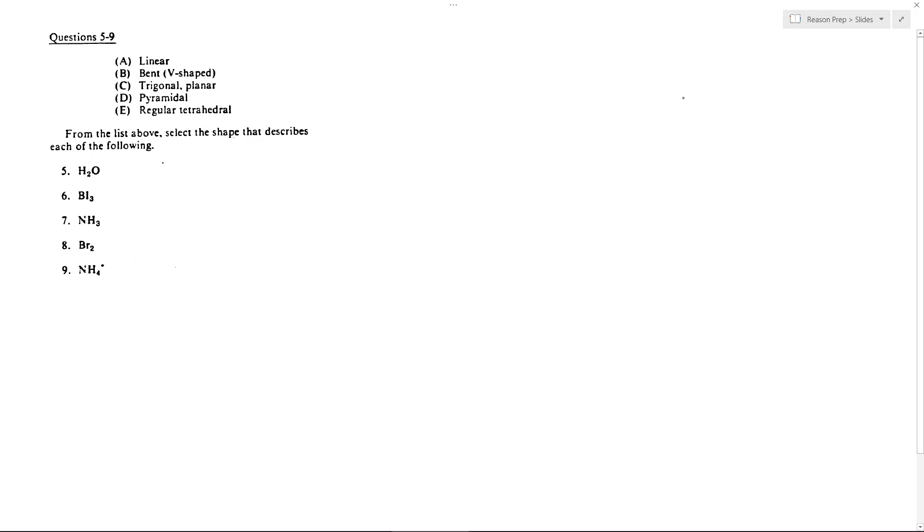Now we have some questions on molecular structure, so let's go through each of these one by one. We'll find the number of valence electrons and then draw the Lewis structures and see what their shapes are. We'll start with water. Each hydrogen has one valence electron, the oxygen has six, so we have eight total valence electrons.